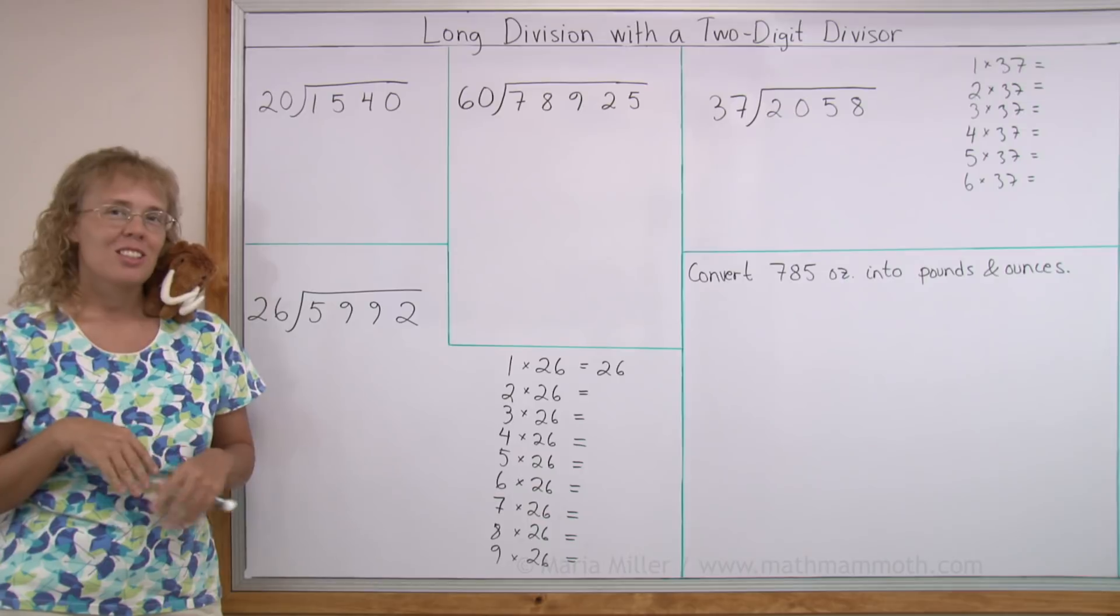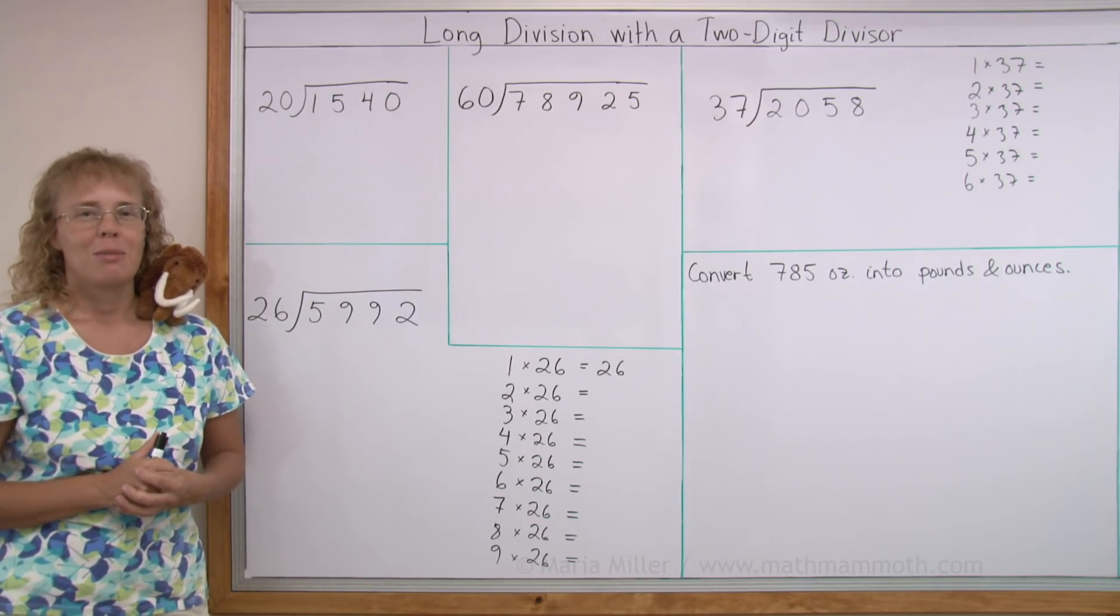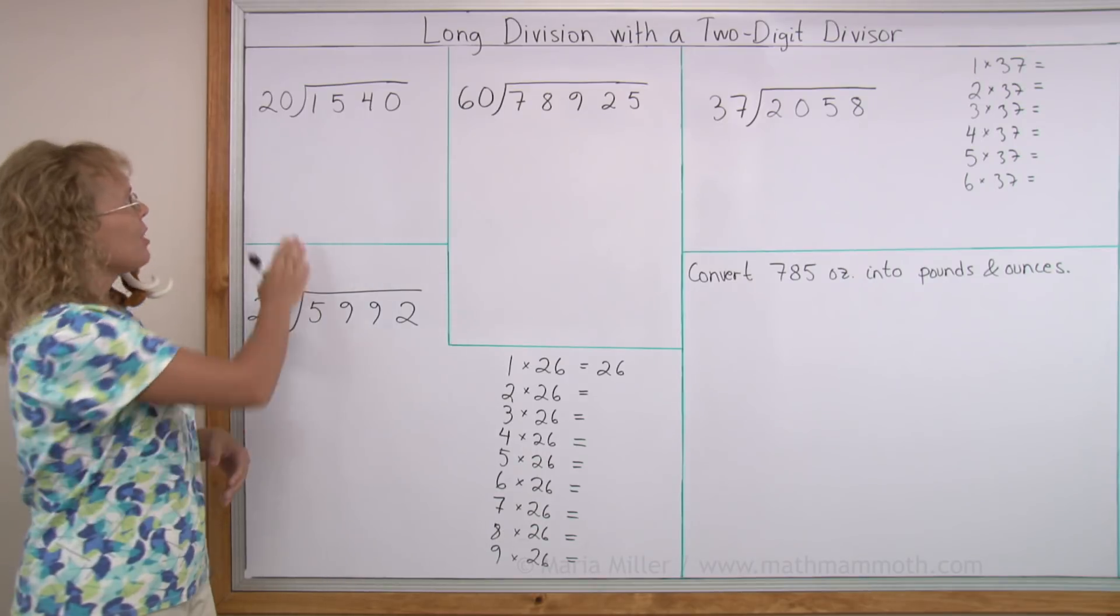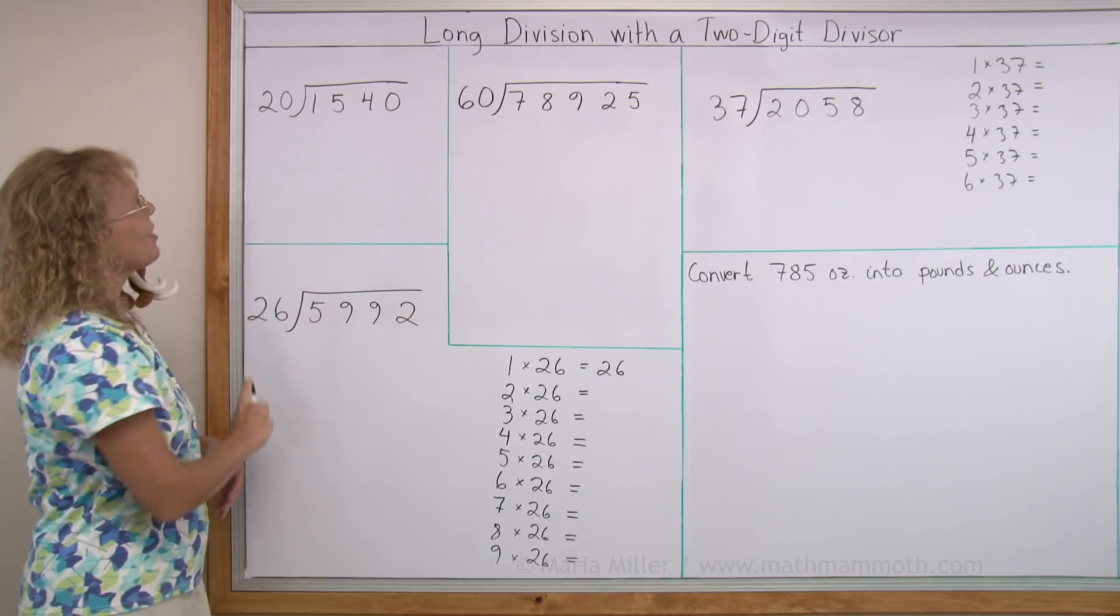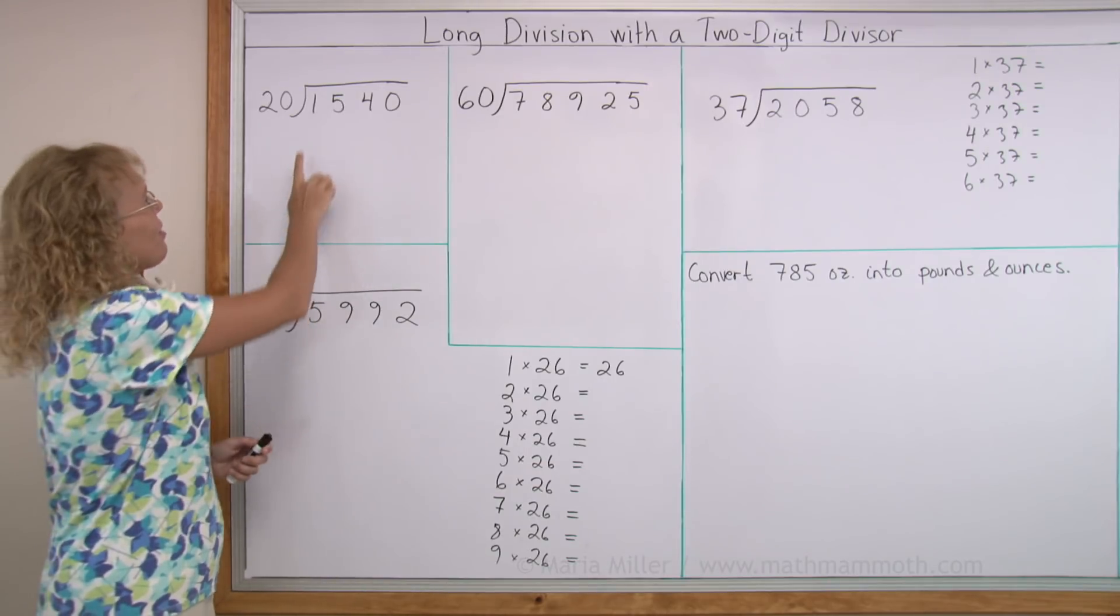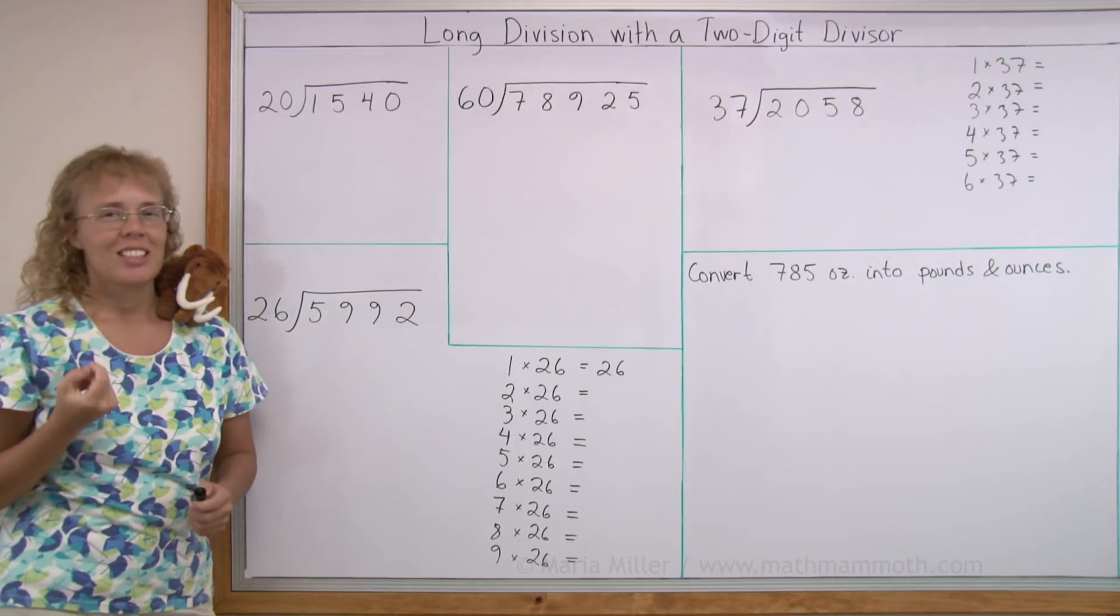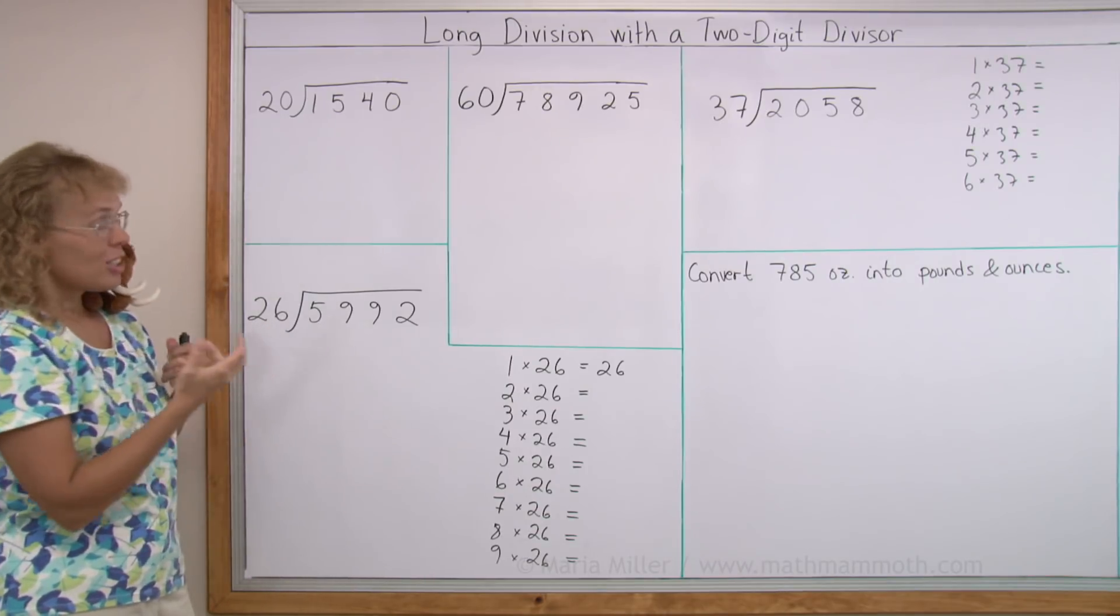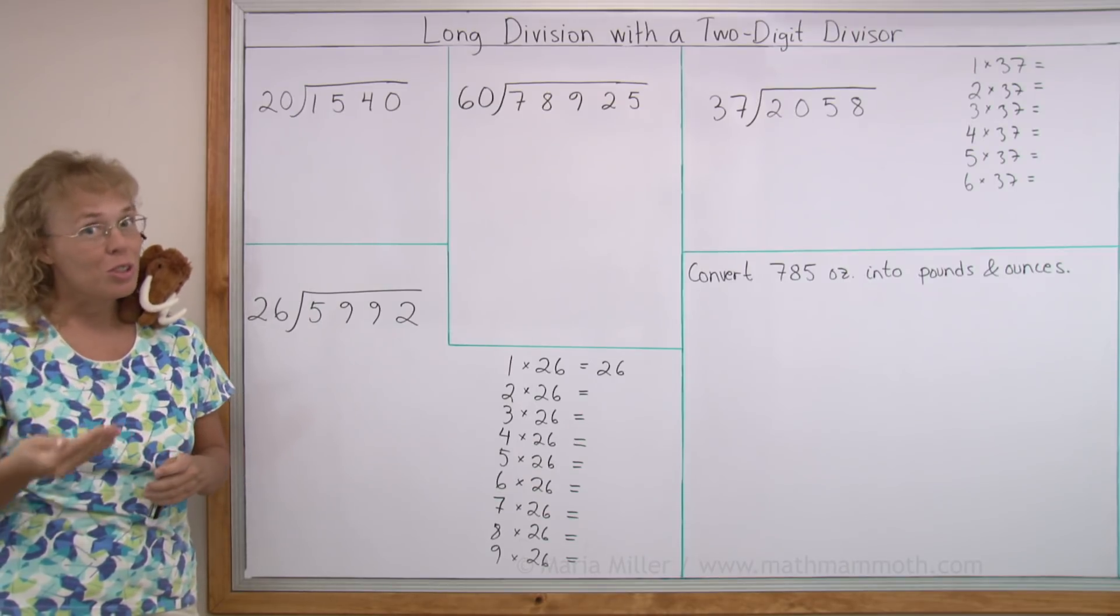So actually there's not really anything new. But there's a little trick that will help you and it gets some getting used to, basically, to divide when your divisor has two digits. I chose an easy one here, 20. So we have 1540 divided by 20. And the reason it's easy is because the multiplication table of 20 is basically very similar to the multiplication table of 2.